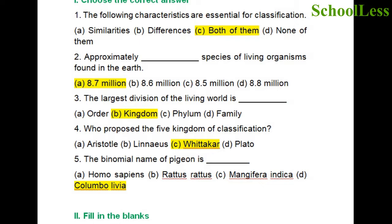Question 5: The binomial name of the pigeon is dash. A. Homo sapiens, B. Rattus rattus, C. Mangifera indica, D. Columba livia. Columba livia is the right answer for the pigeon. Homo sapiens relates to human beings, Rattus rattus relates to rat, and Mangifera indica relates to mango tree.